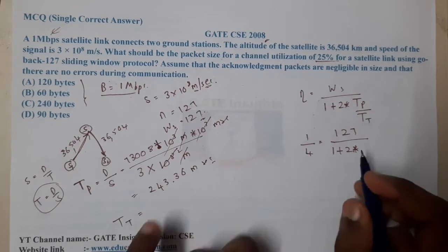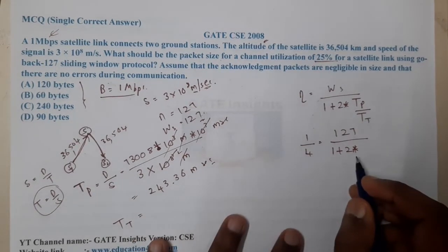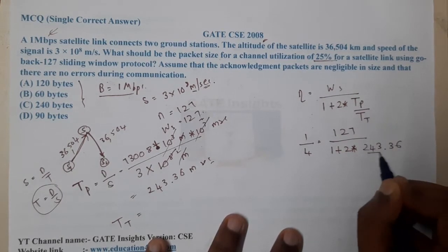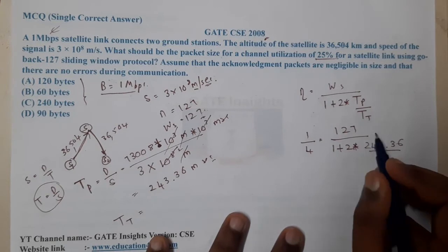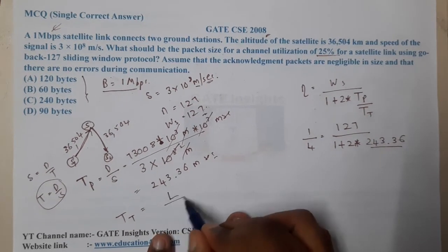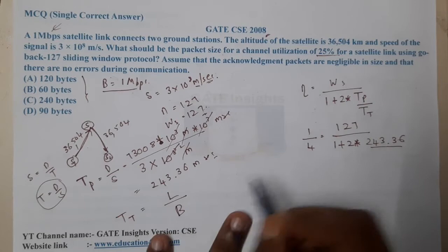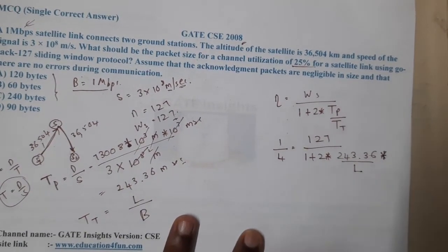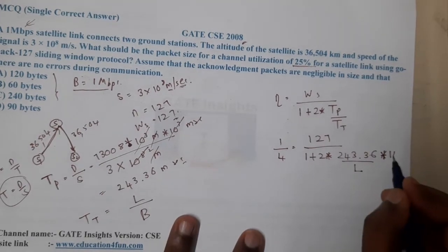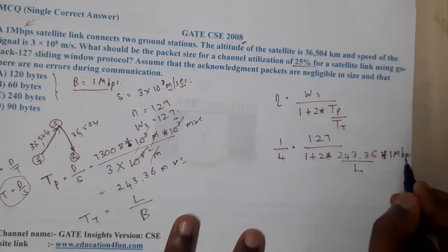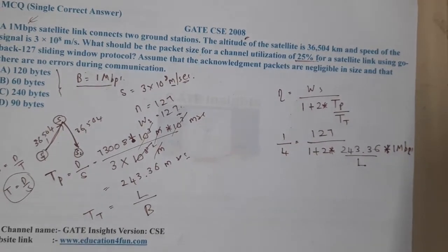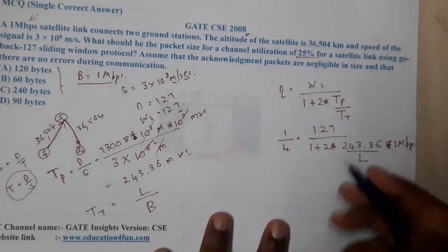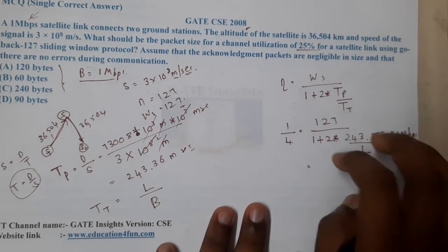We have 1/4 = 127/(1 + 2×243.36/Tt). Tt is length by bandwidth, so Tt = L/(1 Mbps). Let's rearrange: L/(1 + 2×243.36×bandwidth/L). Let me multiply it by 2, so I get 486.72 milliseconds × 1 Mbps.